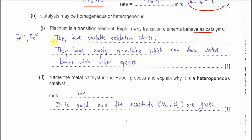Transition elements can act as catalysts because they can form different or variable oxidation states — they can be oxidised and reduced — so they can always be used as catalysts. Additionally, they have empty d-orbitals, so all these transition metals can easily form dative bonds with other species and react. Because they have empty d-orbitals, reactants can easily react on the catalyst surface in heterogeneous catalysis.